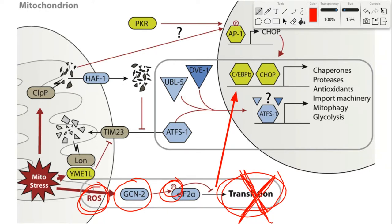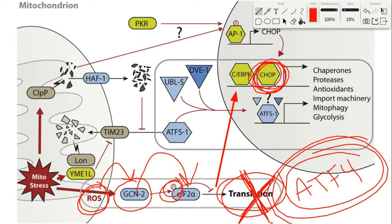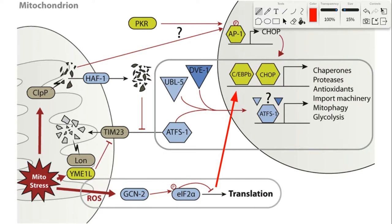EIF2-alpha phosphorylation also leads to the translation of alternative or downstream reading frames like CHOP, and leads to the expression of CHOP and ATF4. ATF4 is very important. So ROS-mediated activation of GCN2 can phosphorylate EIF2-alpha, which leads to the expression of ATF4 and CHOP, which influences gene expression and upregulates chaperones, proteases, antioxidants, and everything else.